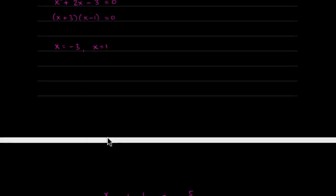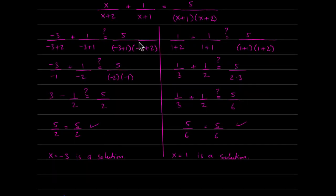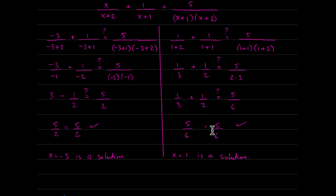These are potential solutions, so we plug in negative 3 and 1. Both sides give a true statement for each, so x equals negative 3 is a solution and x equals 1 is a solution as well.